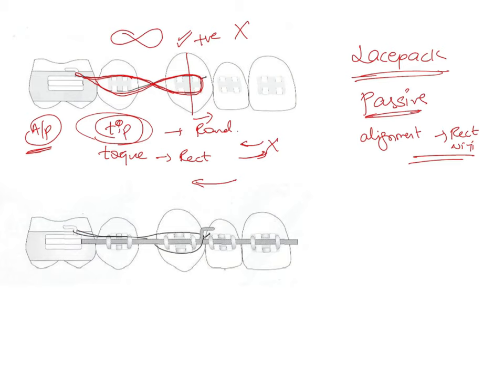A passive tie back is given for a similar reason. However, here we don't engage the canine crown. It is similar to an active tie back except there is no elastic module, which is why it's passive. The ligature wire goes from the hook of the molar tube, bypasses the premolar, and is engaged in the hook of the posted arch.